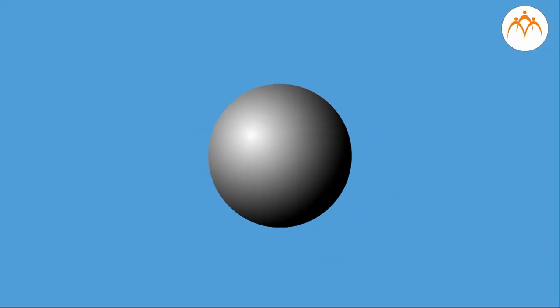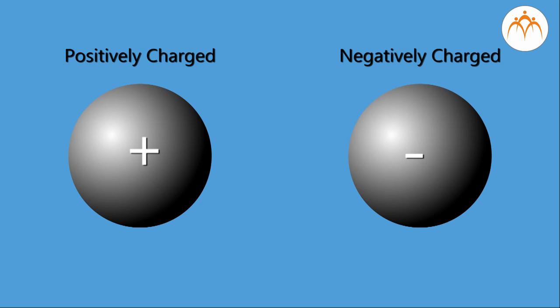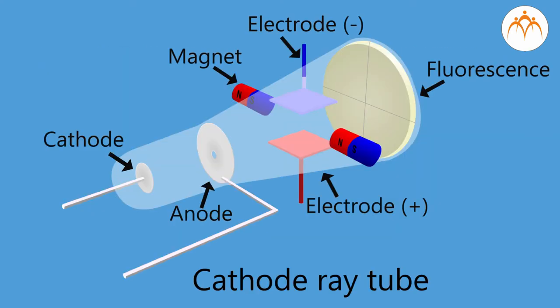Experiments with a glass rod and silk, and an ebonite rod with fur, showed two types of charges being developed. Glass rod and fur develop positive charge; silk and ebonite develop negative charge. This led scientists to believe that the atom must have internal structure — it must have both positively charged and negatively charged particles in it. After extensive experimentation with the cathode ray tube, this idea was confirmed.